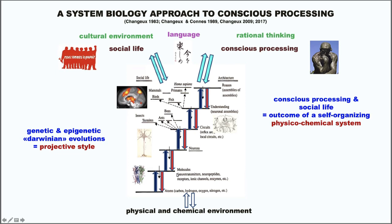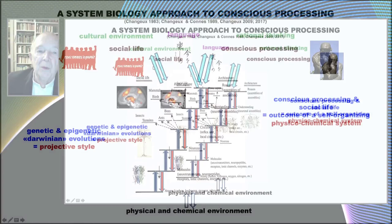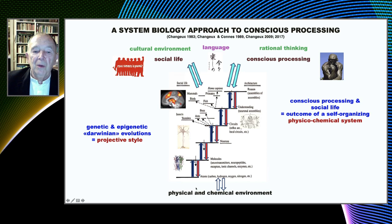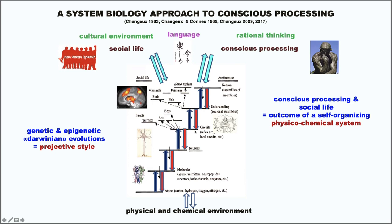The outcome of this complex organization is of course conscious processing, but also social life, cultural environments, and in particular language and rational thinking. So it is important to have in mind this kind of organization with hierarchical and parallel structures, and to realize that all this complexity came out from evolution.